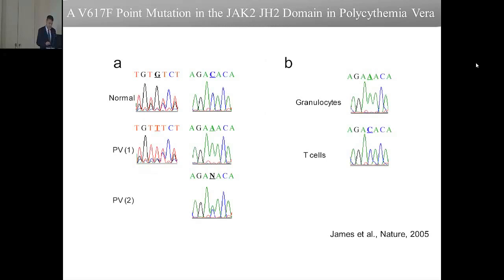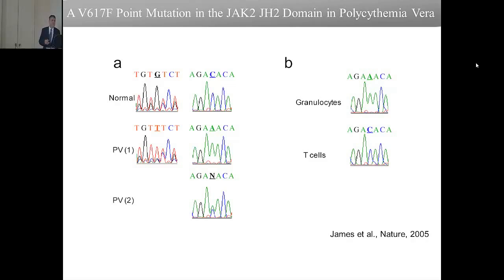We collaborated with Professor William Vainchenker at the Institut Gustave Roussy in Paris, who had a large collection of polycythemia vera patients. The first experiment done was a control sequencing of JAK2 in polycythemia vera, and what emerged was that most patients had a mutation — GTC to TTC — where GTC codes for valine and TTC codes for phenylalanine — in the pseudokinase domain of JAK2. We could see this in erythroid cells and peripheral blood granulocytes, not in T cells, because T cells have very long lives.